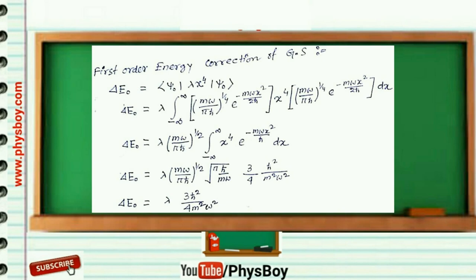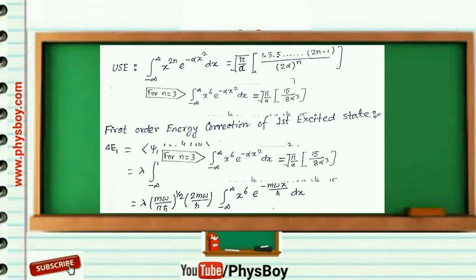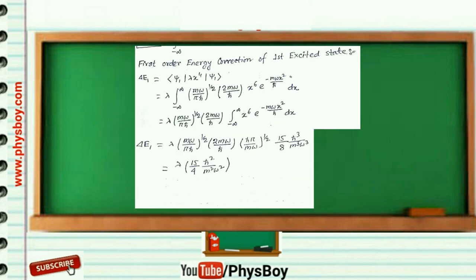Similarly we find the first-order energy correction of the first excited state by inserting the first excited state wave function. Here we have to evaluate an integration with an x to the power 6 term instead of x to the power 4. Putting n equal to 3 in the general integration formula and inserting this value, we get delta-E1 equal to 15 lambda h-bar squared over 4 m-squared omega-squared. So the ratio is 5. In the JEST exam you must answer with 4-digit integers, so the answer is 0005.